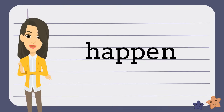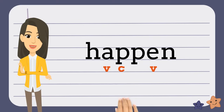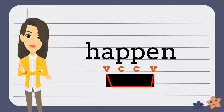Let's try this again. Take a look at this word. The first thing you need to do is find the vowels. So in this word, the vowels are A and E. Next, you're going to have to find the consonants between the vowels. Then bridge the vowels. Finally, draw a line between the consonants. Now the word is broken up.